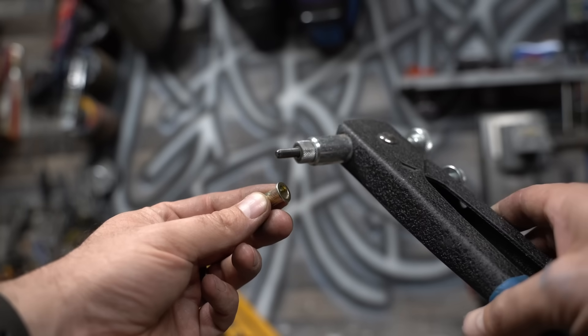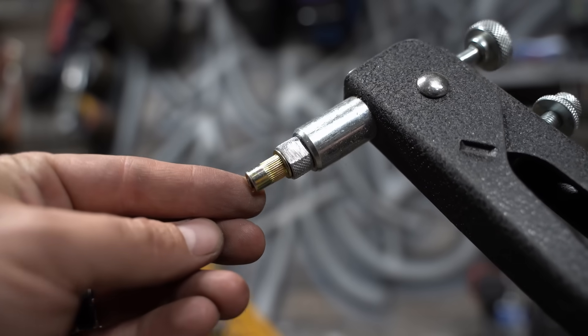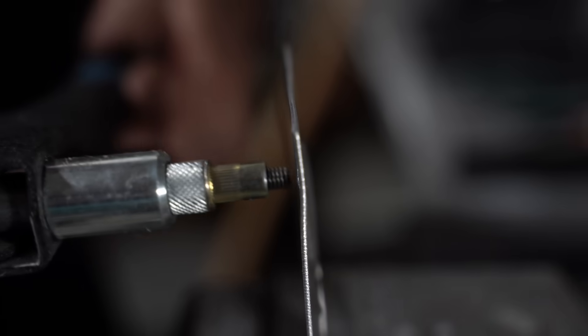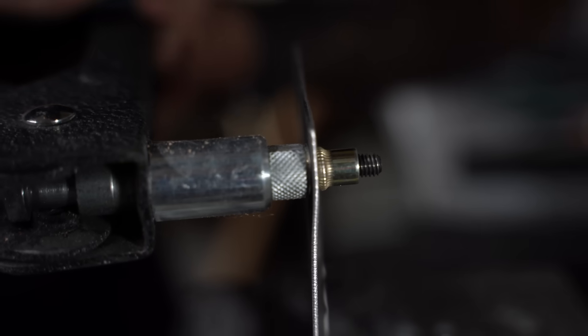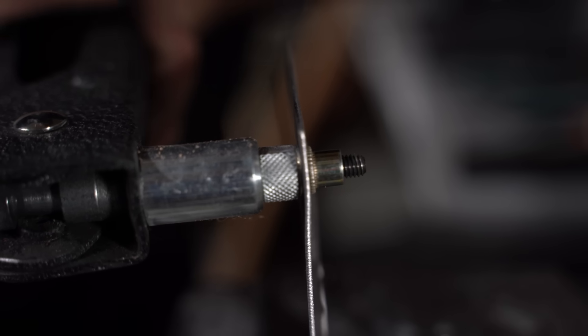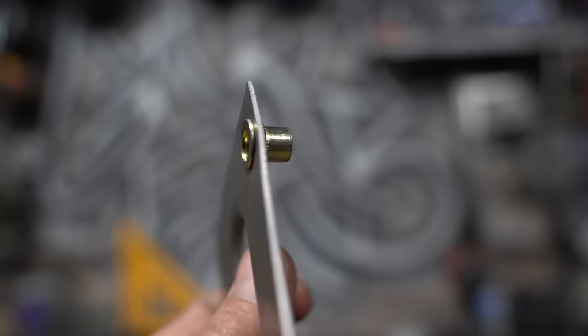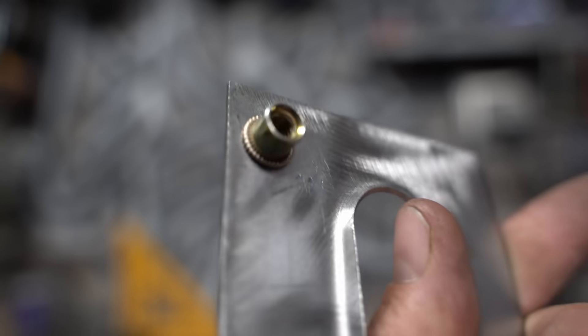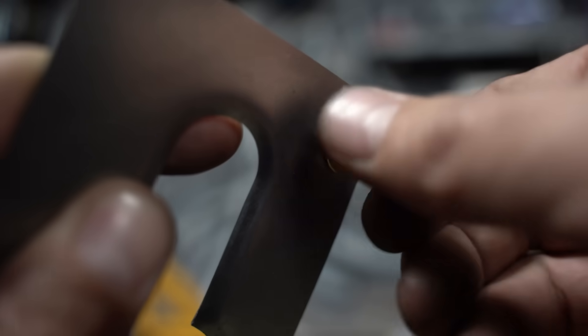The tool resembles a hand riveter. The threadserts themselves resemble rivets in that you drill a hole to match the barrel, and then the tool mushrooms out the threadsert to lock it in place. The best thing about them is you don't need access to the backside of your workpiece. These work best in sheet metal, but can also be used in plastic and fiberglass if it's not too thick.